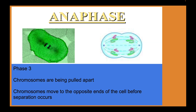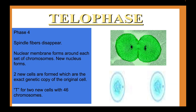That pulling is what happens in anaphase, the third phase of mitosis. Here the chromosomes are being pulled apart — the double-stranded chromosome with two identical strands is pulled apart so that you have two single-stranded chromosomes. Importantly, the number of chromosomes remains the same. The chromosomes are moved to opposite ends of the cell before separation occurs.